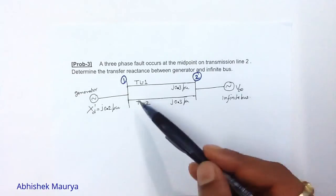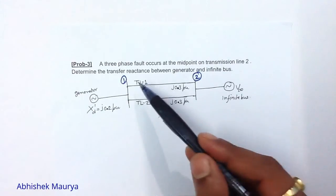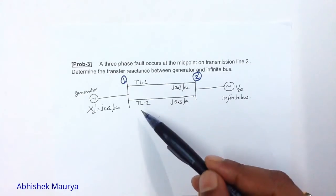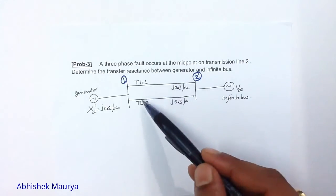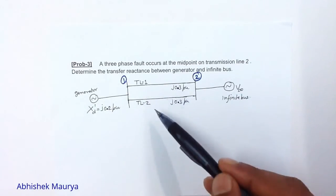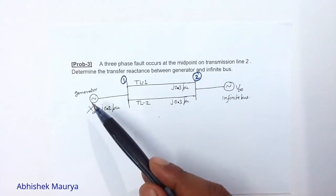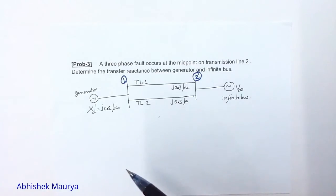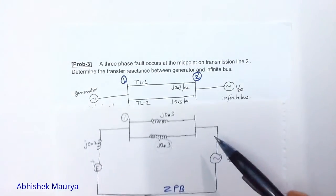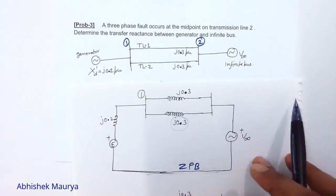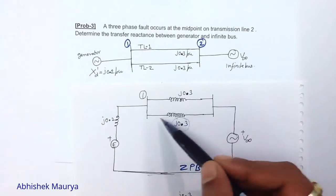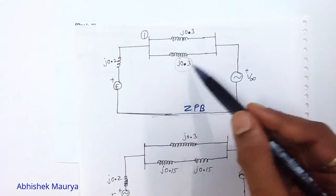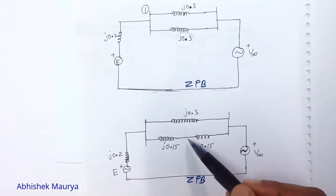In problem number three, a three-phase fault occurs at the midpoint of transmission line number two. During the fault we have to calculate the transfer reactance between the generator and the infinite bus. We draw the per unit reactance diagram and divide the reactance of transmission line two into two equal parts — J0.15 and J0.15 — with the fault located at the midpoint.